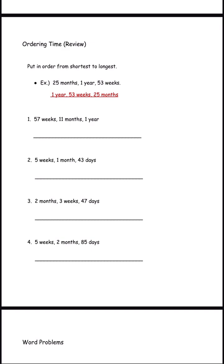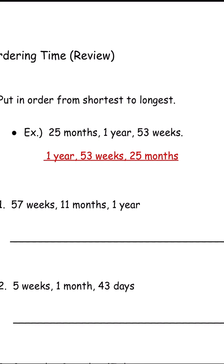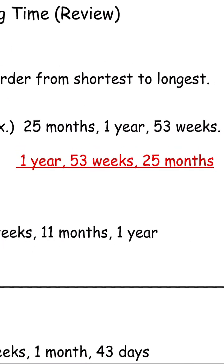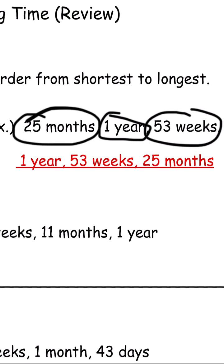For this page we have ordering time review. We have to put times in order from shortest to longest. For example, we have 25 months, one year, and 53 weeks — we already did this last time so you probably know it, but let's review. One year is the least, and then 53 weeks should be in the middle because 53 weeks is somewhere between one year and 25 months.